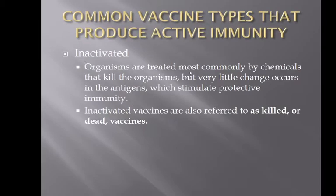Common vaccine types that produce active immunity. We have inactivated vaccines. These are organisms treated most commonly by chemicals that kill the organisms, but very little change occurs in the antigens which stimulate the protective immunity. So we are inactivating by killing the organisms, but not changing the structure of the antigens. Inactivated vaccines are also referred to as killed or dead vaccines.